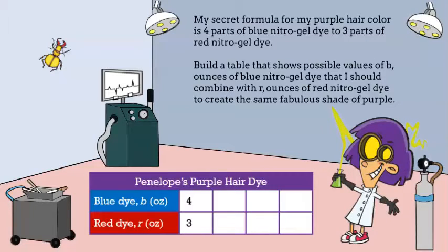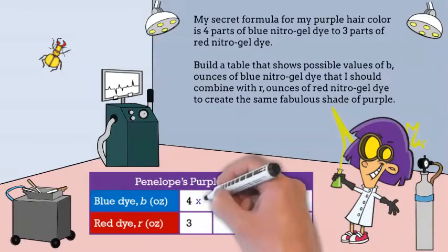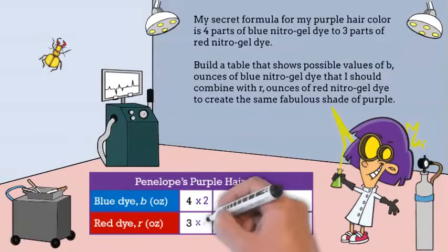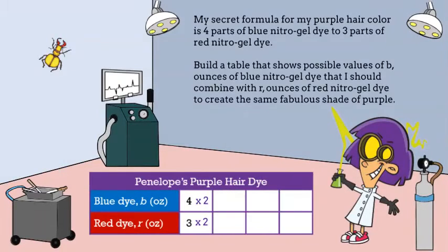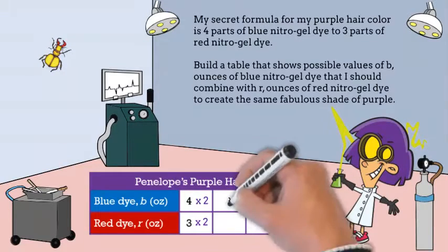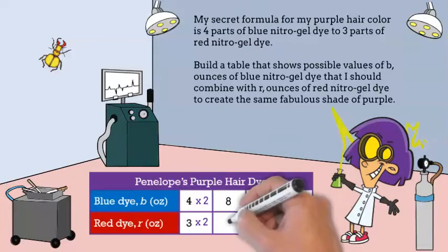Now if we want to expand the table, we simply take the numerator and denominator and multiply them both by two. That's right — you get eight over six.